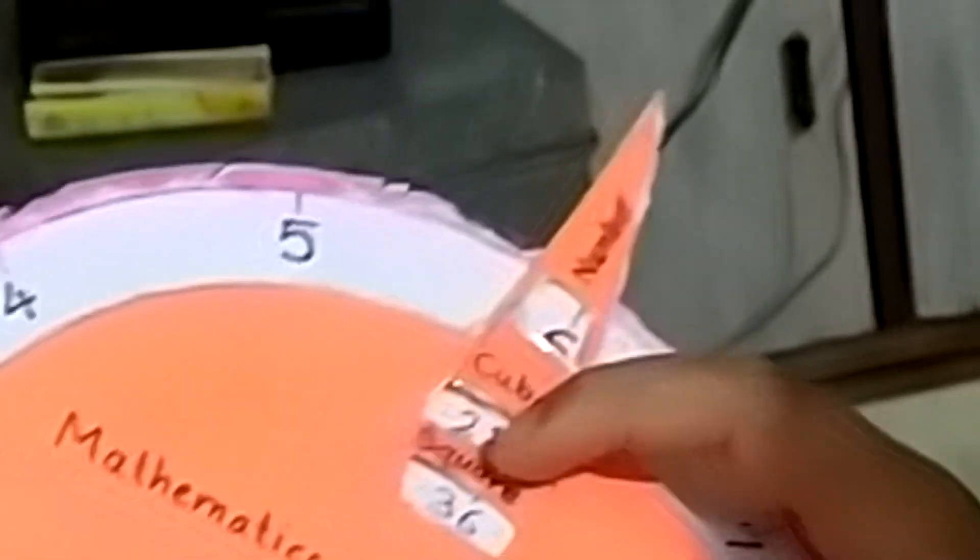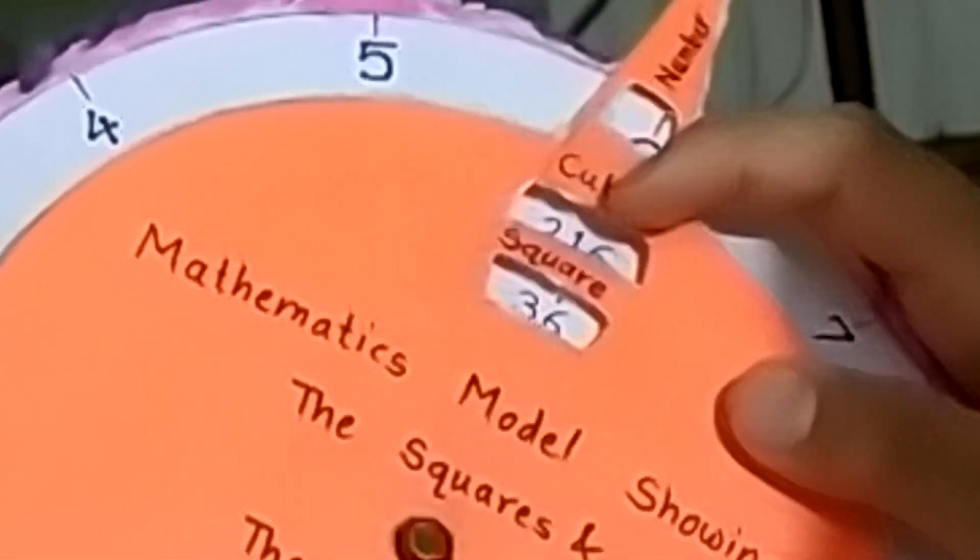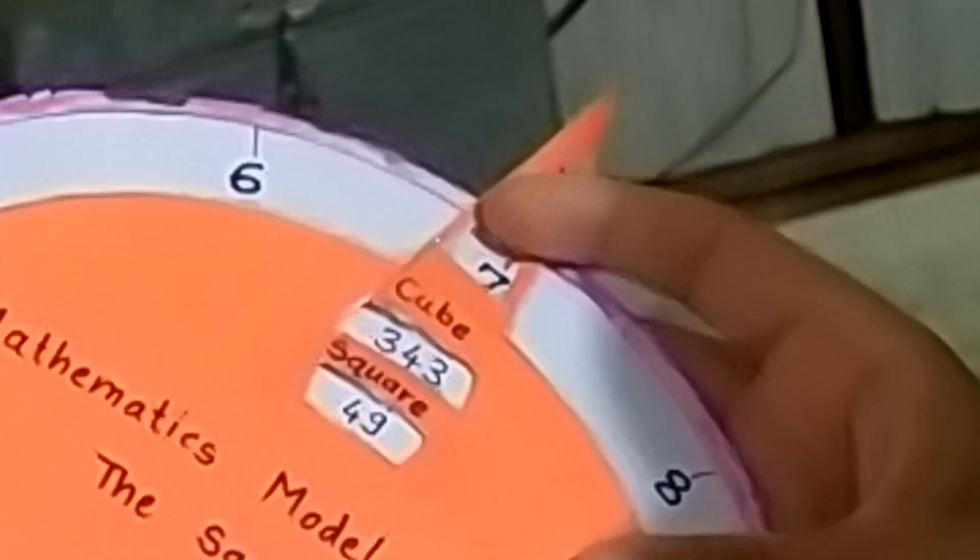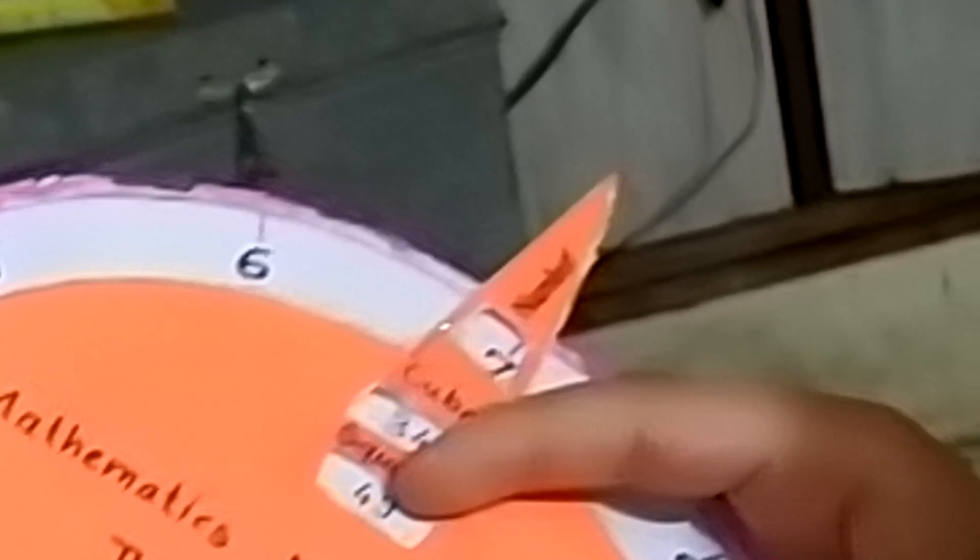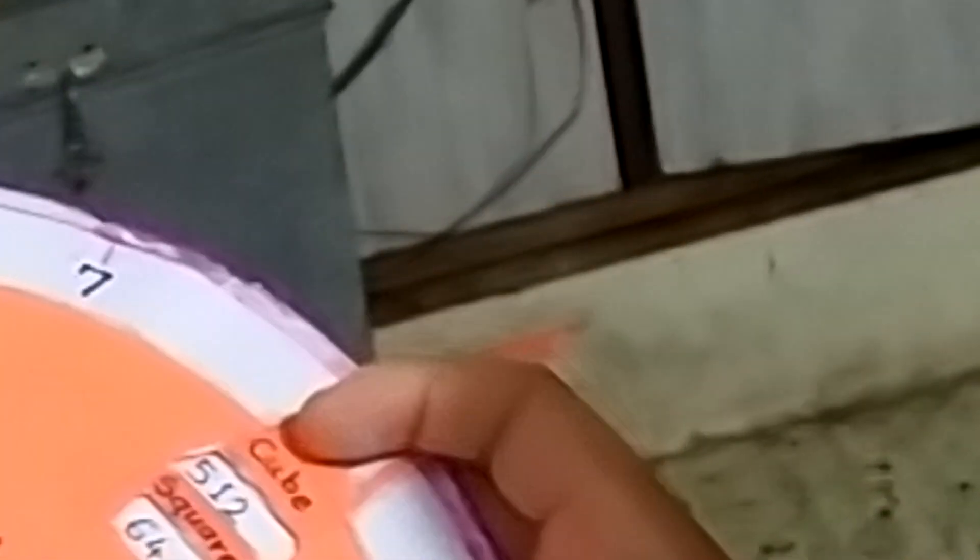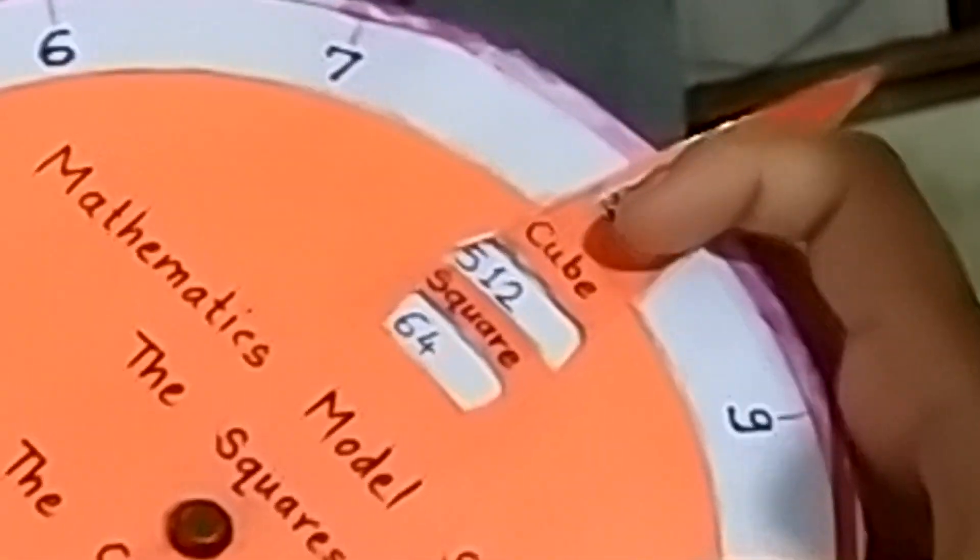6's square is 36 and 6's cube is 216. 7's cube is 343 and square is 49. 8's square is 64 and cube is 512.